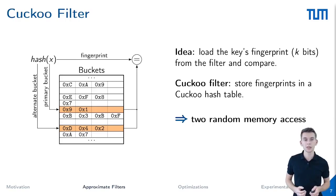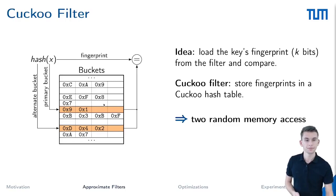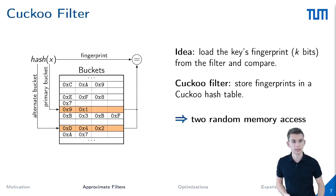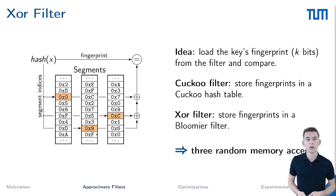The cuckoo filter uses the cuckoo hashing scheme and stores multiple fingerprints in a bucket to achieve high load factors. In the figure on the left side, we can see a cuckoo filter with 4-bit fingerprints. To test for membership, we first look for the key's fingerprint in the primary bucket. If the key is not in that bucket, we then check the alternate bucket. So for this filter, we can expect at most two cache misses per lookup.